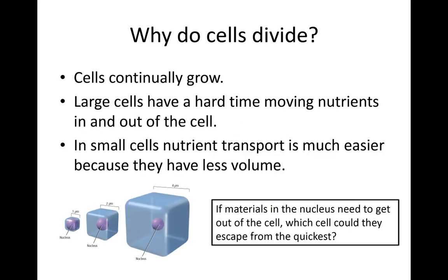So why do cells have to divide? Cells are always growing, and larger cells have a really hard time moving nutrients and waste products in and out — as we learned in cellular transport. The larger they are, the more cytoplasm, the bigger the space, and they become unhealthy. We need small cells where nutrient transport is easy because they have so much less volume. If we divide a big cell into two, we reduce that huge size in half, making it a lot healthier.